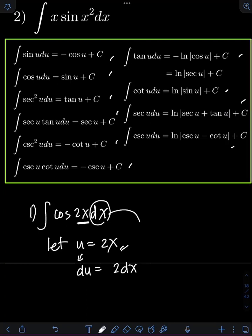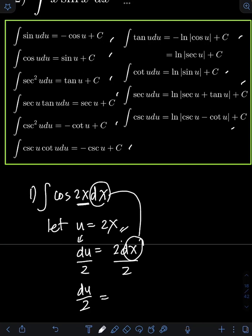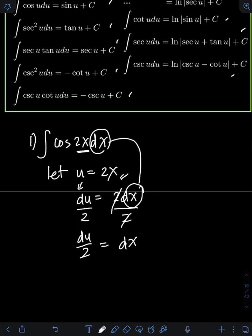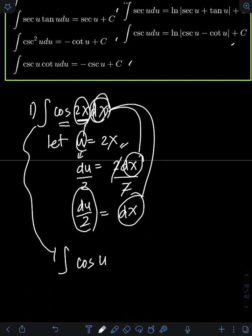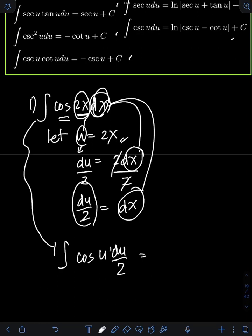We have this dx term in the original integral. Let's get rid of this extra coefficient of 2 by dividing both sides by 2, so we will have du over 2 is equal to dx. If we substitute, we will have the integral of cosine 2x, which is now equal to cosine u, and this dx is equal to du over 2. So this constant of one-half I can just put in front of the integral, giving us one-half times the integral of cosine u du.